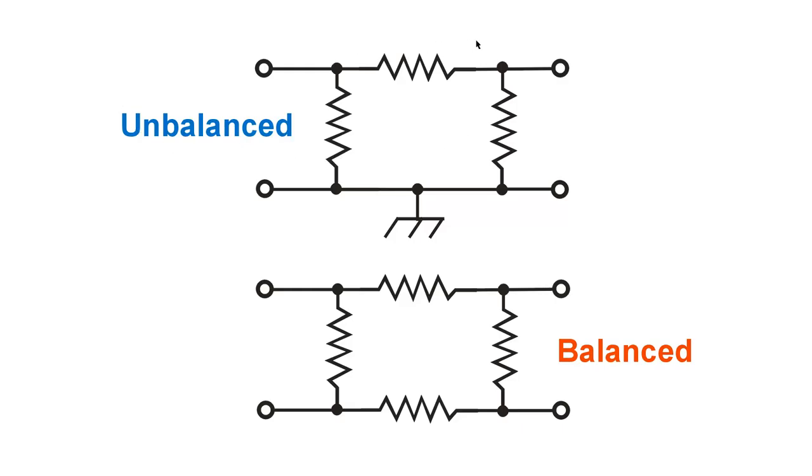A good example of the application of an unbalanced attenuator pad would be when you want to drive a high-powered linear amplifier for ham radio purposes, but this amplifier only requires a few watts of input.